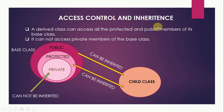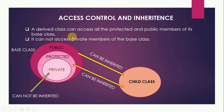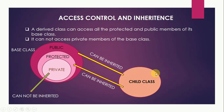Now, access control and inheritance. A derived class can access all the protected and public members of its base class. It is very important to note that it cannot access private members of the base class. If a base class has three sets of members — private, protected, and public — the private members are never inherited. Protected and public members can be inherited by the child class. Private members of a base class are never inherited.